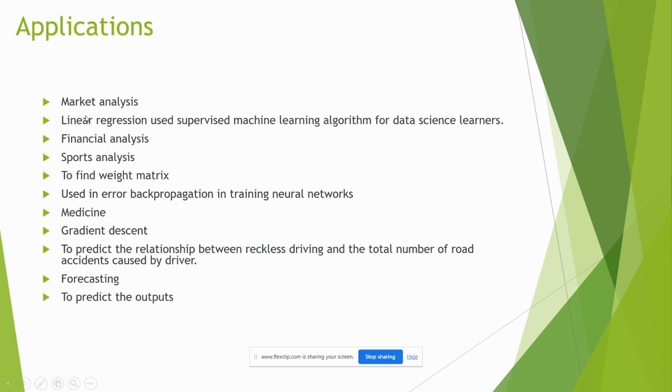Applications of linear regression line. Nowadays, we use it in market analysis and finance and sports analysis. In sports, we have to predict that each team will win. To find the weight matrix used in error back propagation and medicines in gradient descent algorithm.